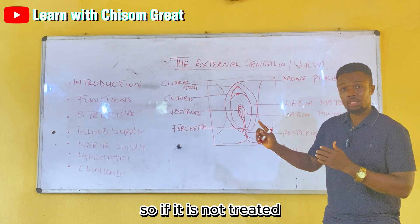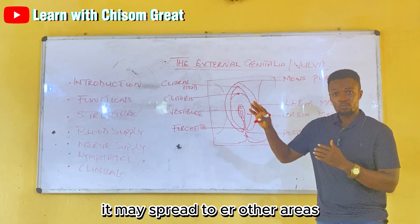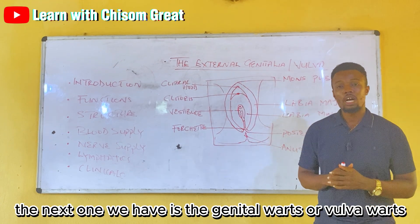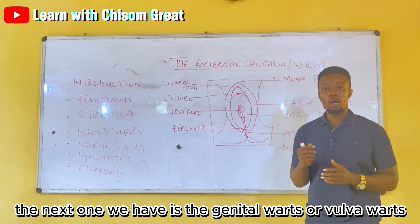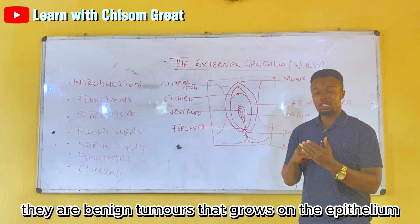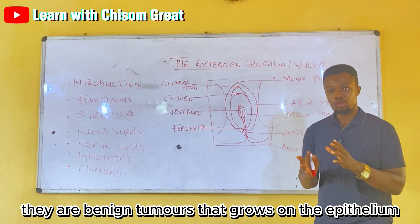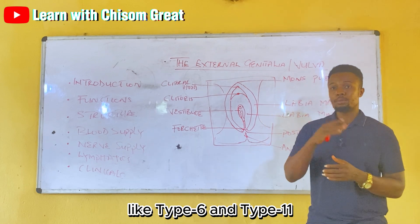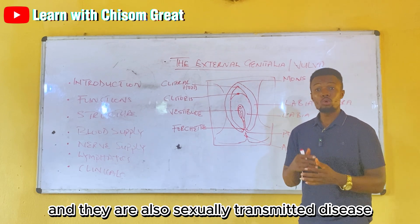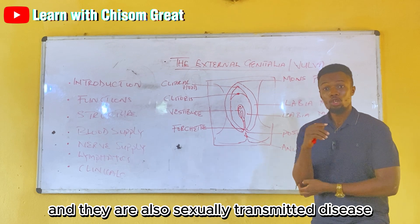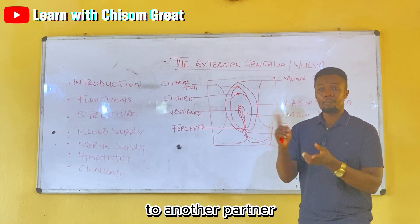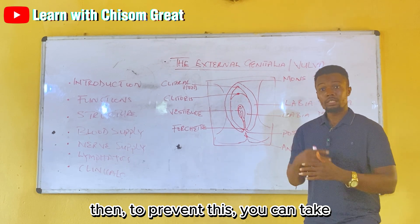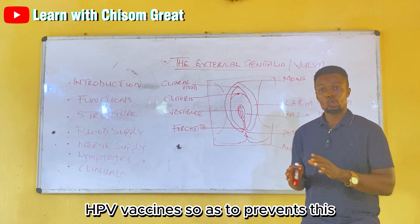The next clinical condition is genital warts, also called vulval warts. These are benign tumors that grow on the epithelium. They can be caused by HPV types 6 and 11 and are sexually transmitted diseases, meaning they can be passed from one partner to another. HPV vaccines can be taken to prevent this.